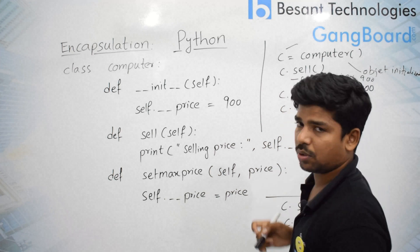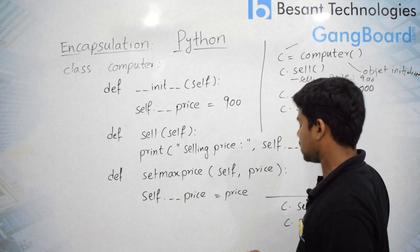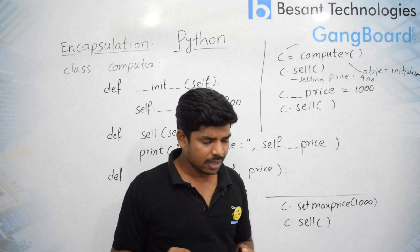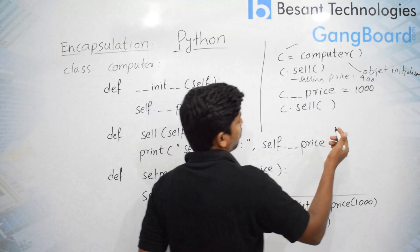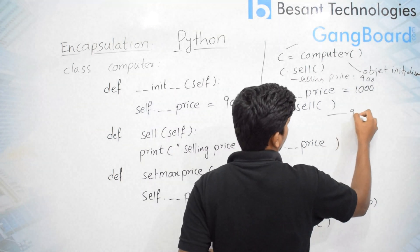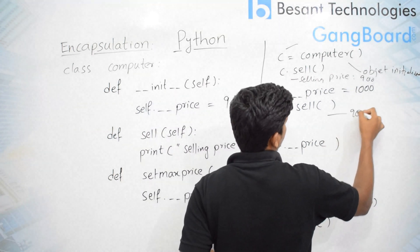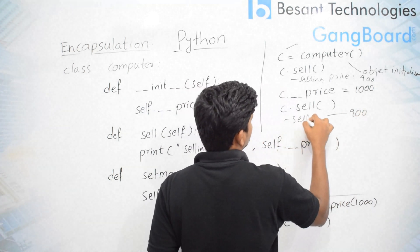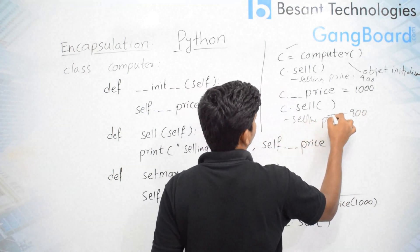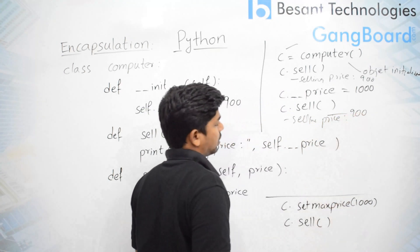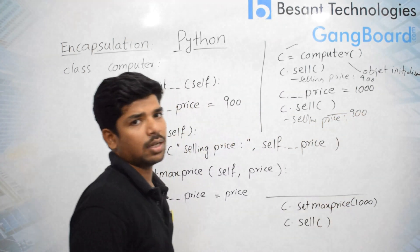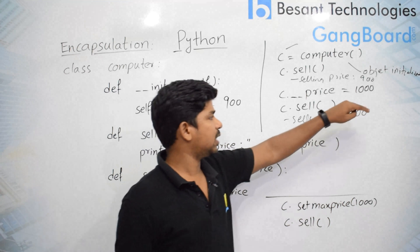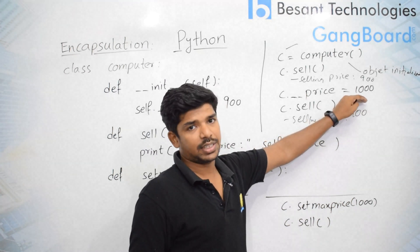So now I set C dot price equals to 1000 and when I call C dot sell again, you might expect it to give 1000, but it will give only the output 900 — selling price 900. That means the value has not been changed.